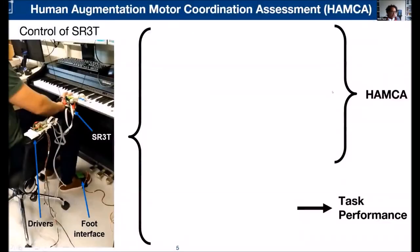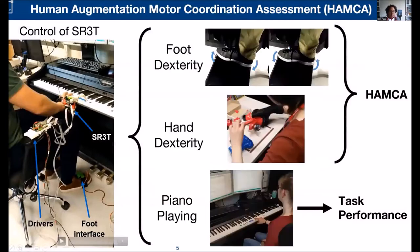The control of the system, and this is an early version that we photographed here, is set by this foot interaction interface. Basically to assess how good people are and how good they can be in learning to operate the SR3T, the thumb, we developed a protocol where we simply first measured the dexterity of controlling the rotation and flexion of the foot.